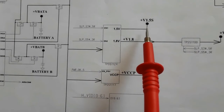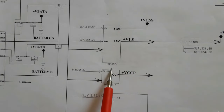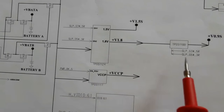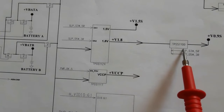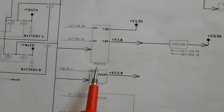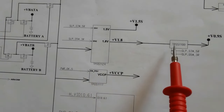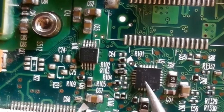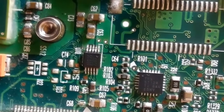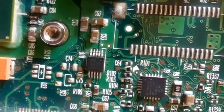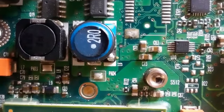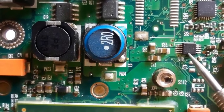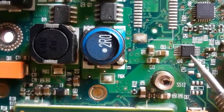Now the power management IC for 1.5 volt and 1.8 volt — the TPS51124. And also the TPS51100, which is responsible for generating 0.9 volt for the RAM. Here you can see TPS51124 on the right, and TPS51100 here — the power management IC that generates 0.9 volt VTT for the RAM, the random access memory.